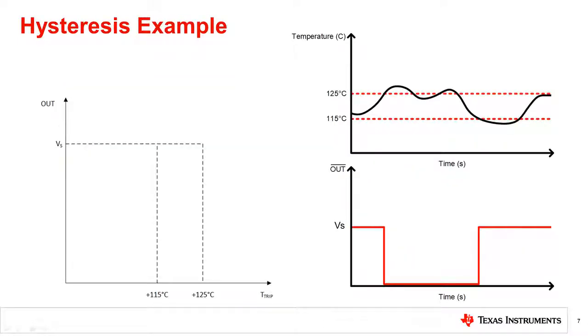Let's look at another example of how the output of a temperature switch will behave with respect to the hysteresis and trip accuracy in a high temperature application. The trip point is set to 125 degrees Celsius, and the hysteresis is set to 10 degrees Celsius. As the temperature increases towards the trip point, the output pin is at the supply level, VS.